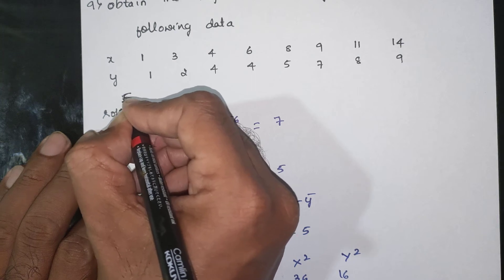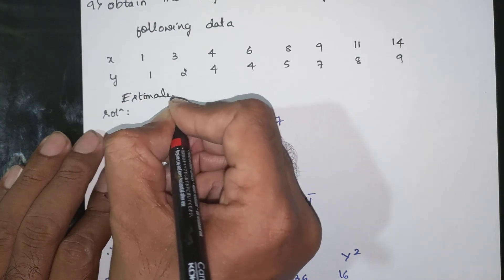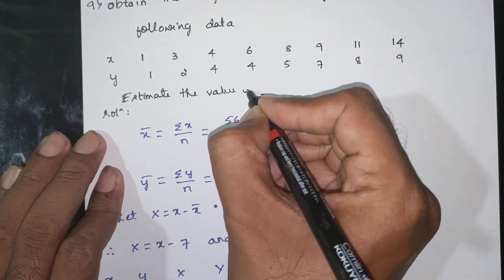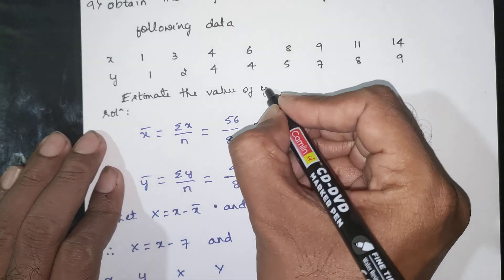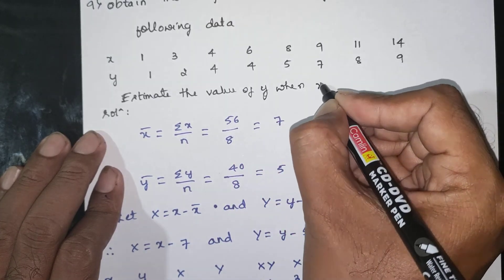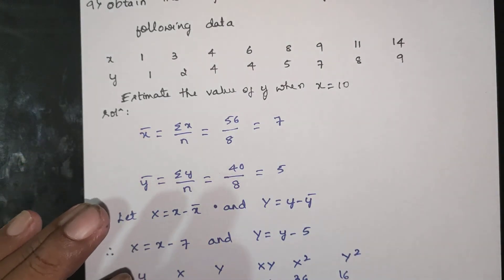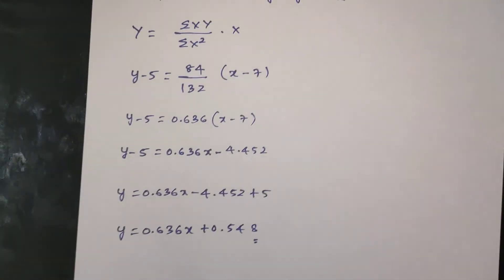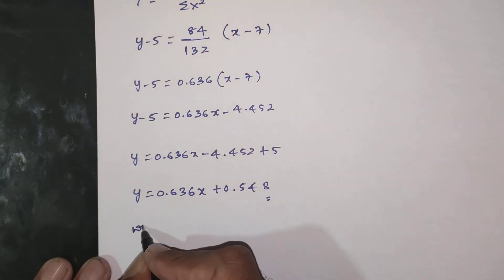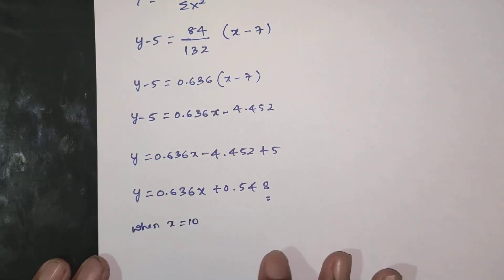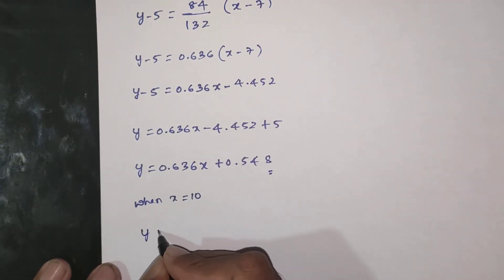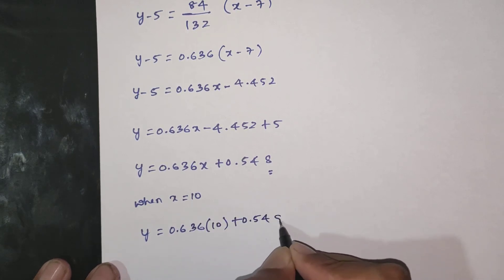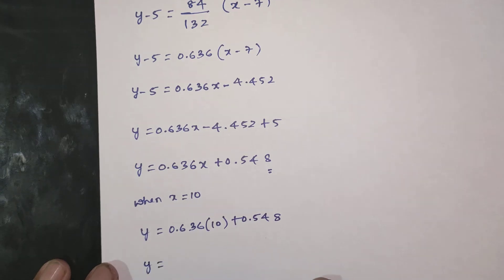Now estimate the value of y when x = 10. Using the regression line of y on x, when x = 10: y = 0.636 × 10 + 0.548 = 6.36 + 0.548 = 6.908.